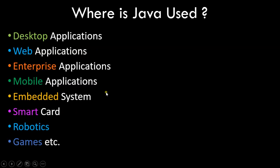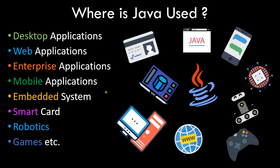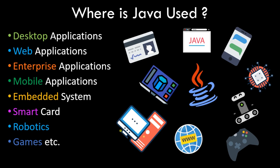Where is Java used? A better question would be where is Java not used, because it is such a diverse language used in almost every type of application. For example: desktop applications like basic software and antiviruses, web applications with dynamic websites, enterprise applications like ERP systems, mobile applications like Android where the back-end code is written in Java, embedded systems, smart cards, robotics, games, and more. Java is consistently in the top 10 programming languages for this reason.